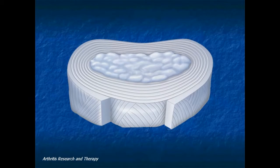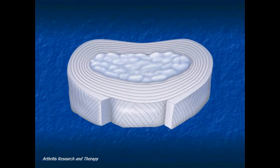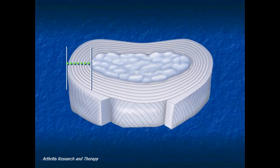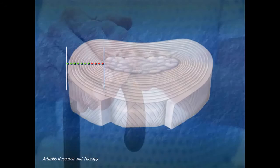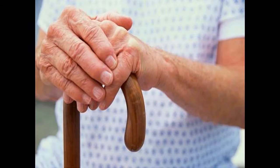According to an article in Arthritis Research and Therapy, as the body ages, the boundary between the two parts of the disc becomes less obvious. And with increasing age, the nucleus or center of the disc generally becomes more stiff and fibrotic and less gel-like. The loss of this gel-like structure in a disc has a major effect on the disc's load-bearing ability.